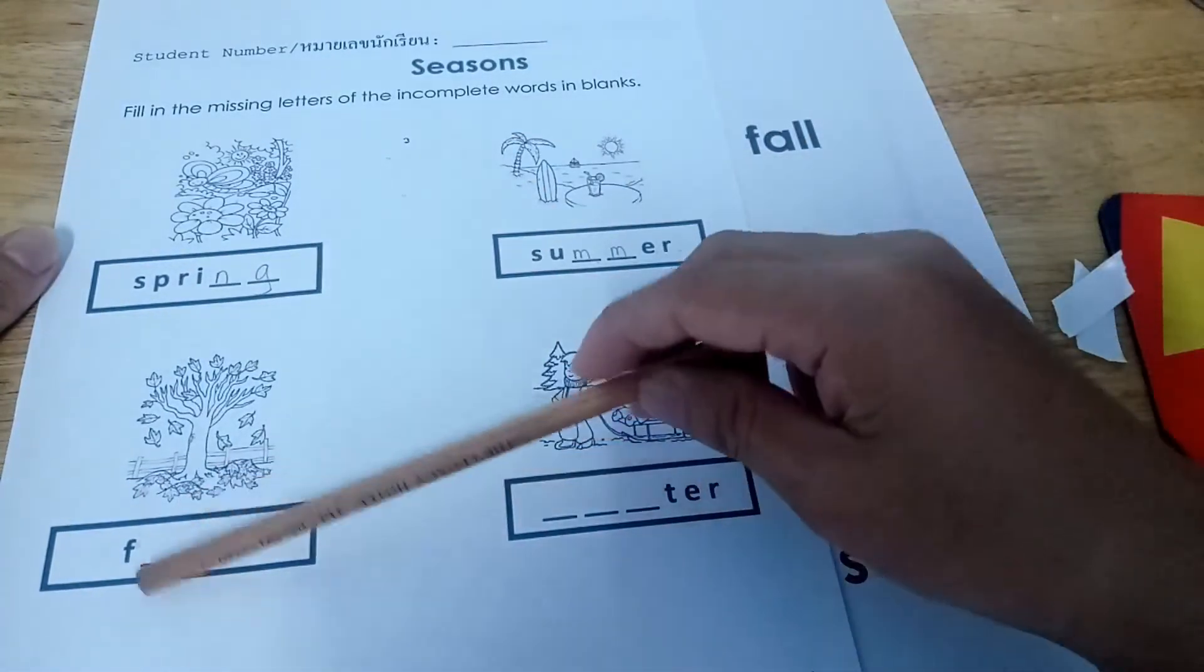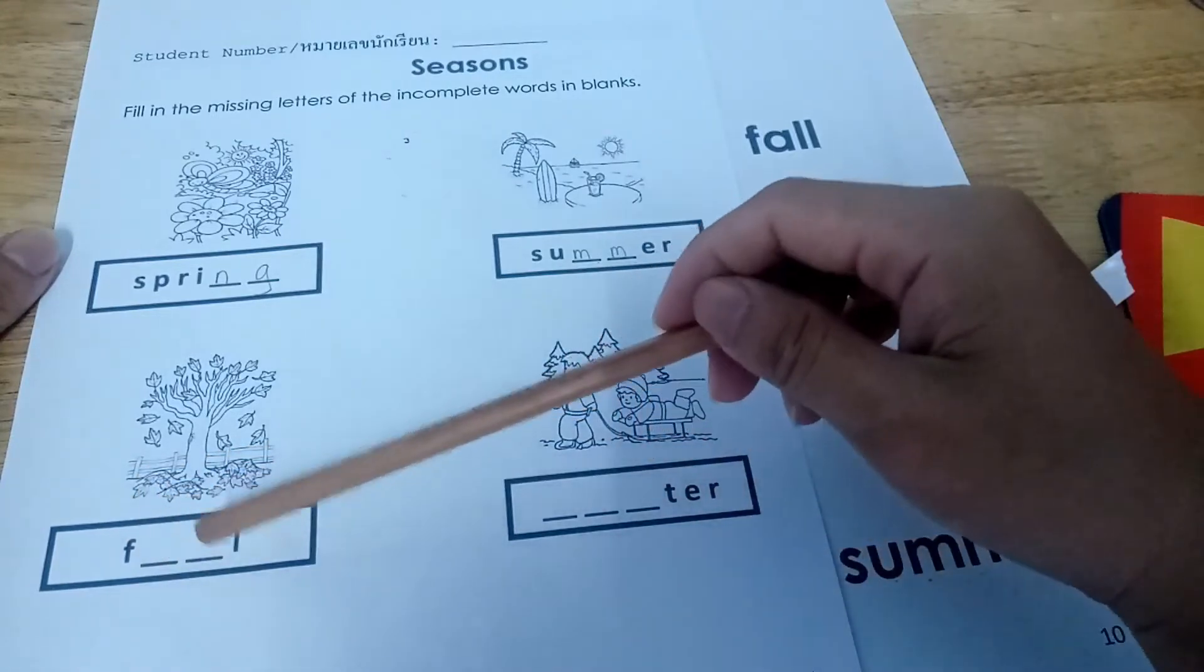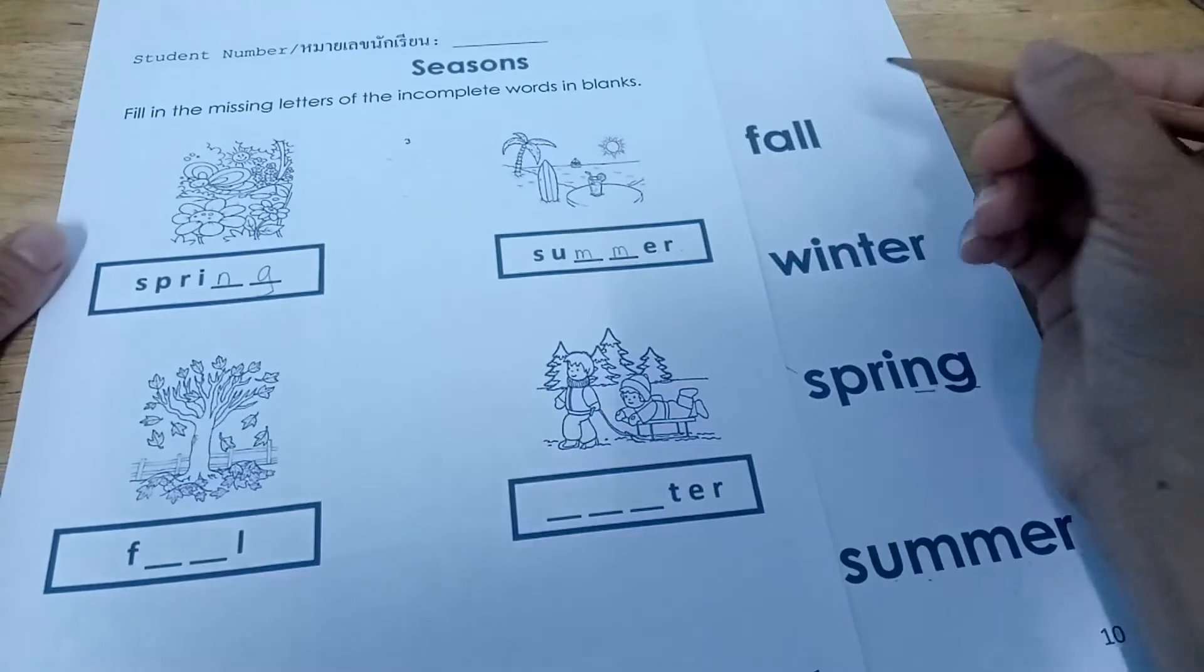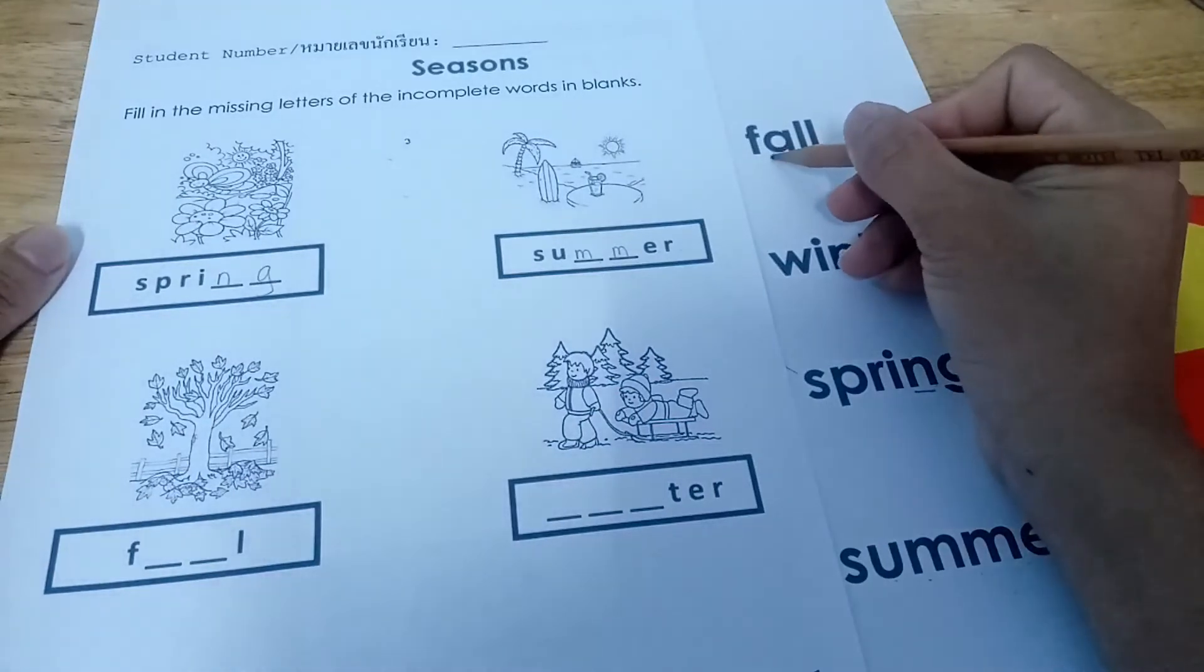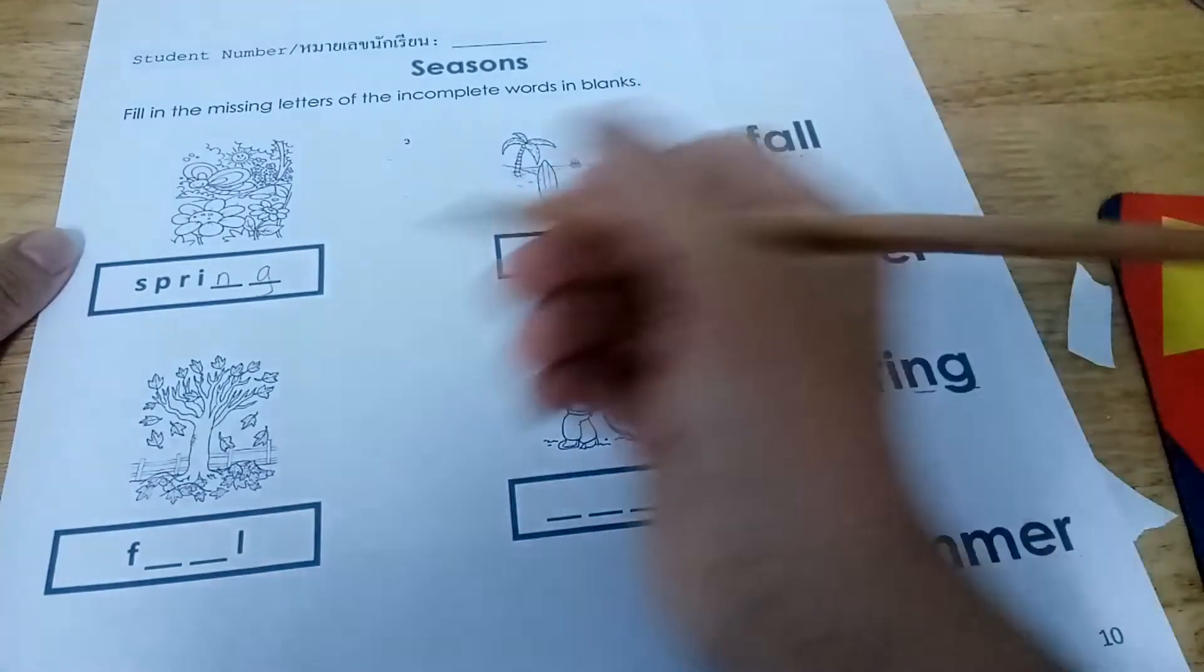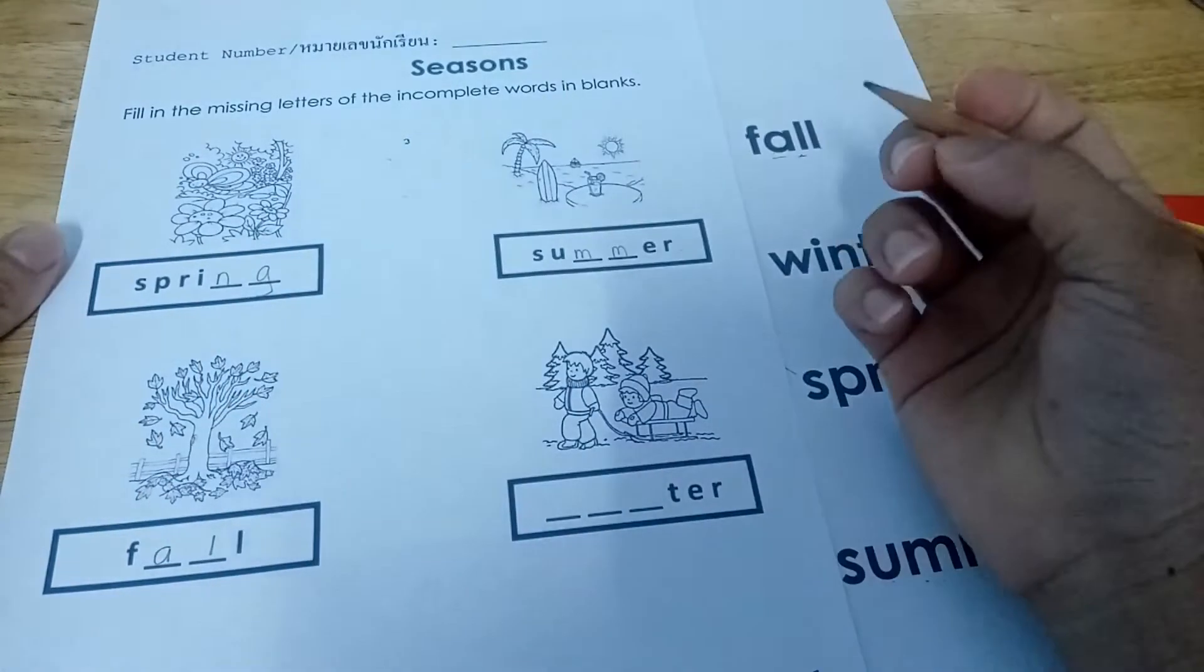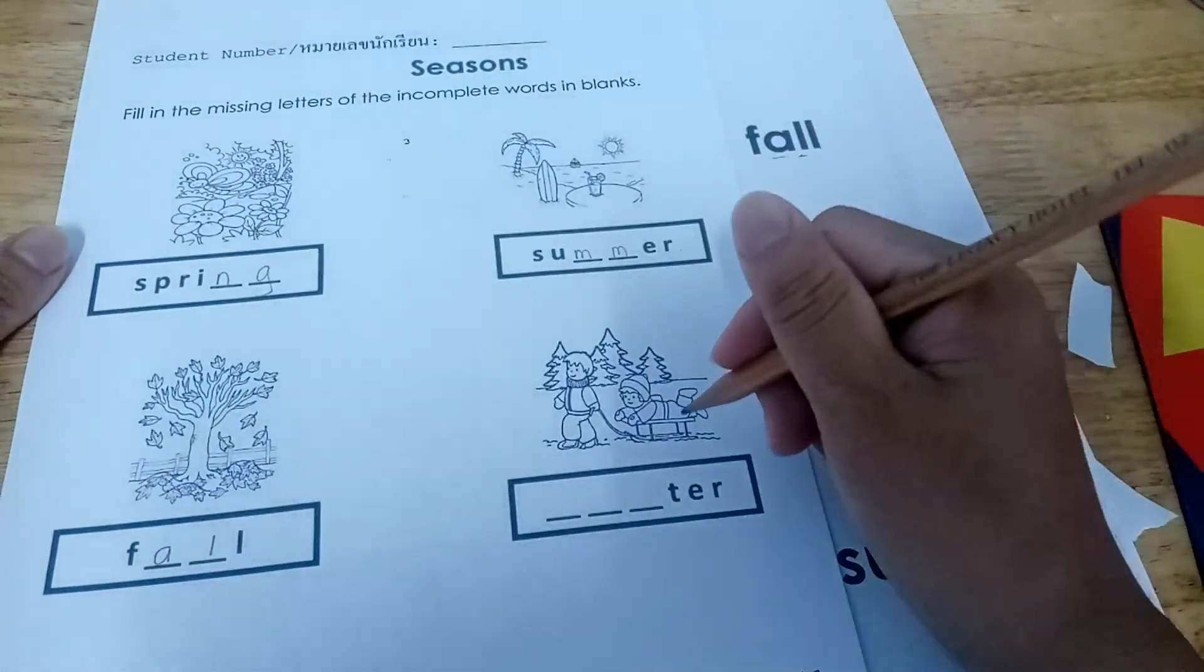Okay, next is F-blank-L. So, what are the missing letters? It's the letter A and L. So, let's write here. A and L. Okay, next is winter.